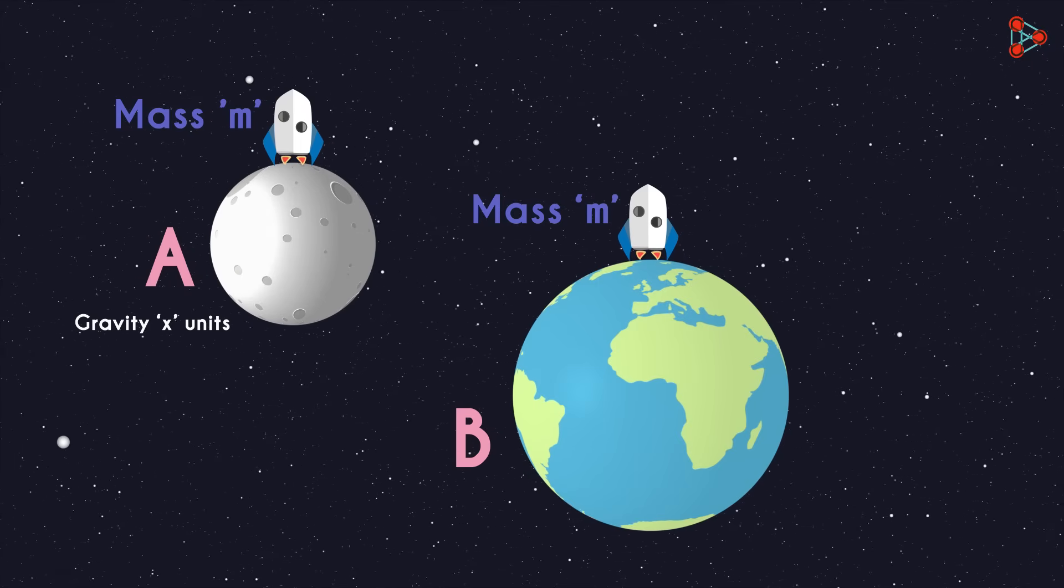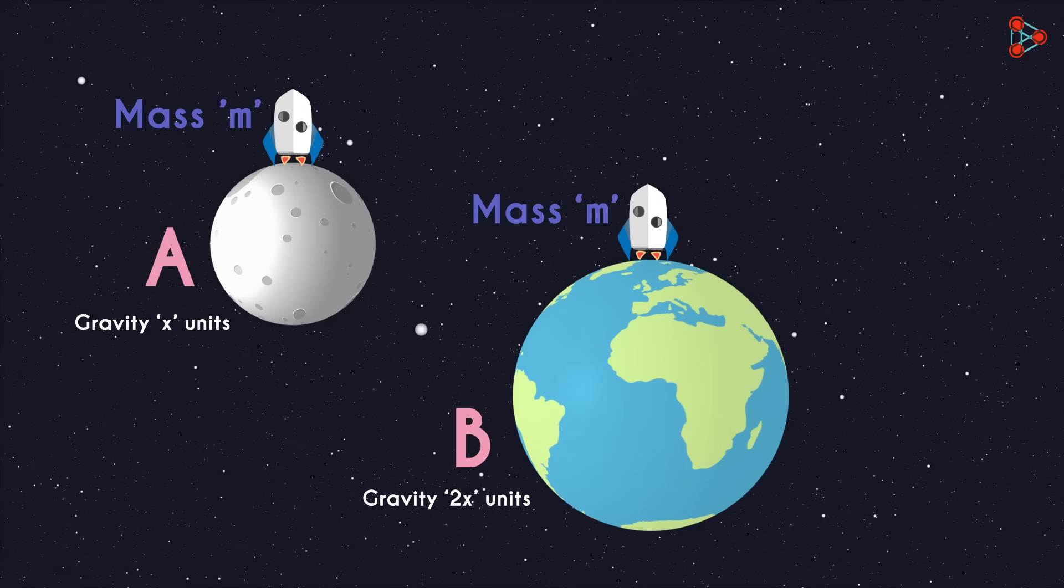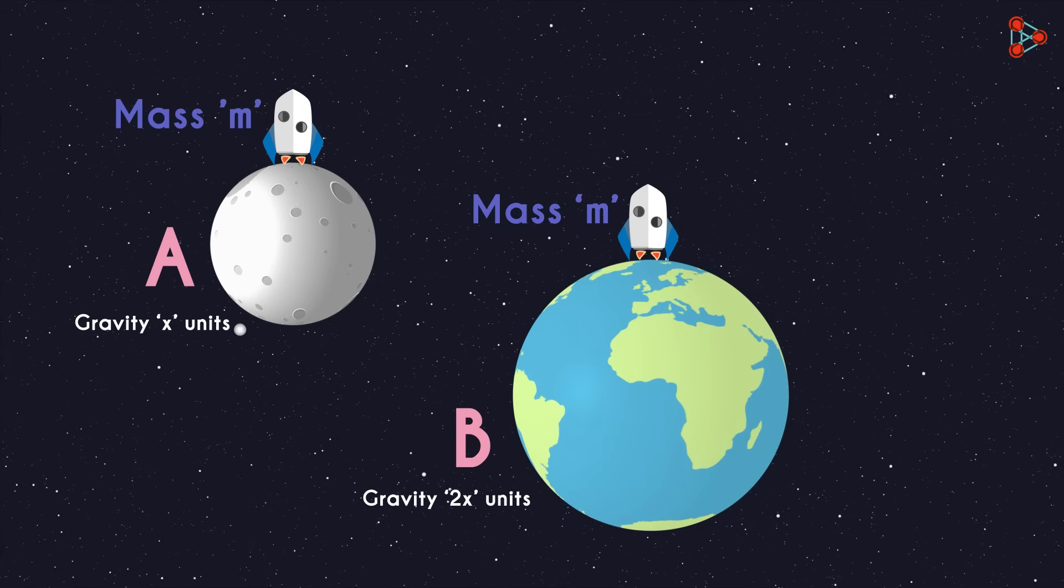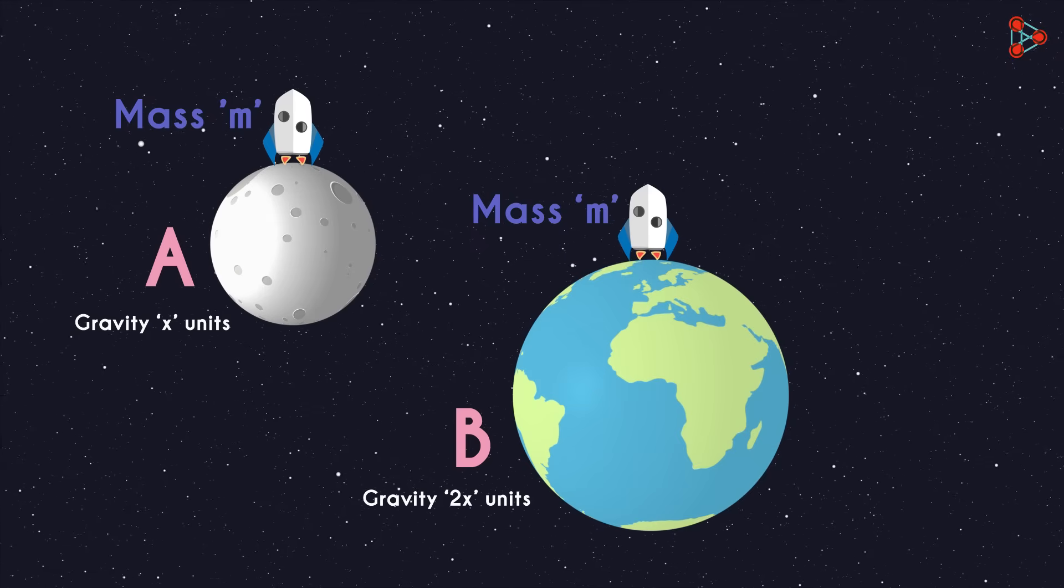And in place B, the pull of gravity is 2x units. Clearly the pull of gravity is stronger at place B. Now understand this well.